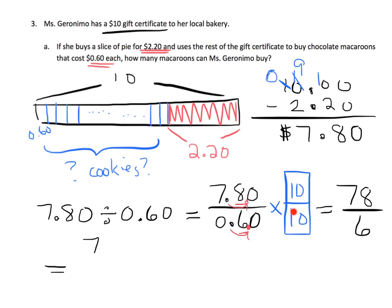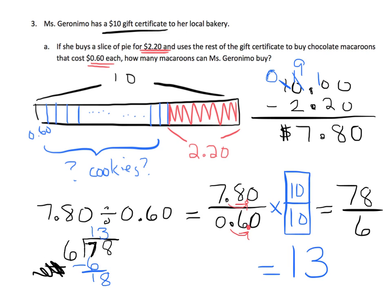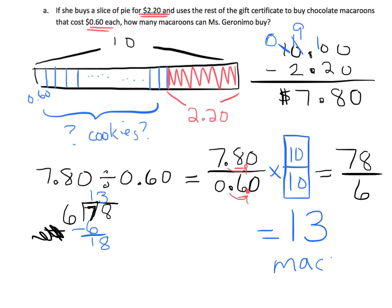Parents and teachers, we could have multiplied by 100, moving the decimal twice to get 780 divided by 60 — a different fraction but the same value. I chose to multiply by 10 over 10. Now dividing 78 divided by 6, doing our scratch work, the answer is 13. So how many cookies could she buy? She could buy 13 macaroons.